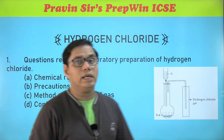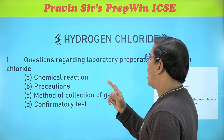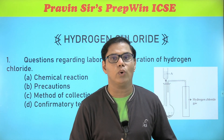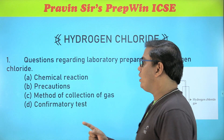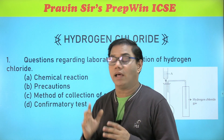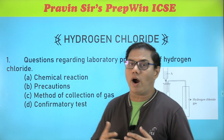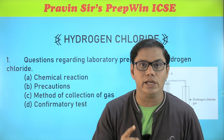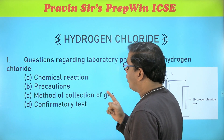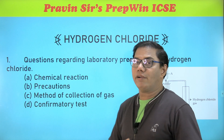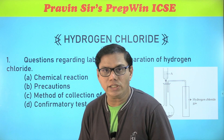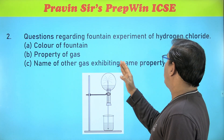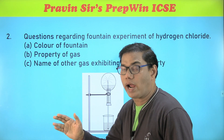Prediction number one is the questions regarding the laboratory preparation of hydrogen chloride gas — with reference to the chemical reaction, then precautions you need to take while preparing hydrogen chloride, the method of collection, and the confirmatory test. Prediction number two is related to the fountain experiment of hydrogen chloride.